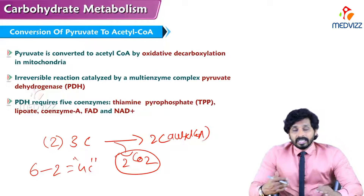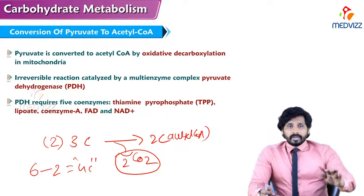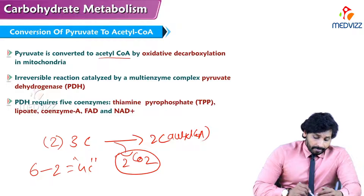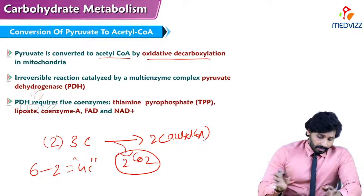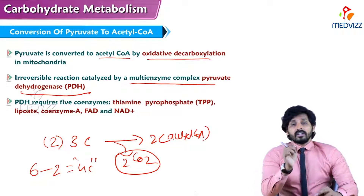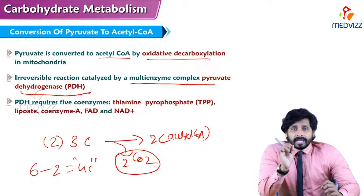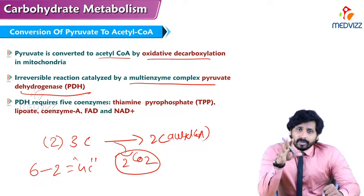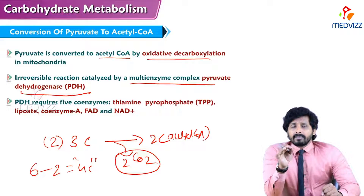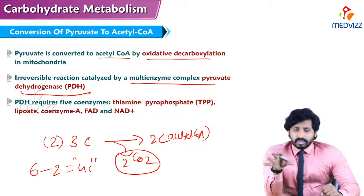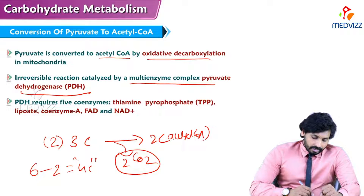Six carbons from glucose are converted to three carbons in pyruvate; after removing two CO2, four carbons remain, which are sequentially removed via the citric acid cycle. Pyruvate is converted to acetyl-CoA by oxidative decarboxylation in the mitochondria — an irreversible reaction catalyzed by the multi-enzyme complex pyruvate dehydrogenase. Although named as a single enzyme, it carries five enzymatic functions and requires five coenzymes.